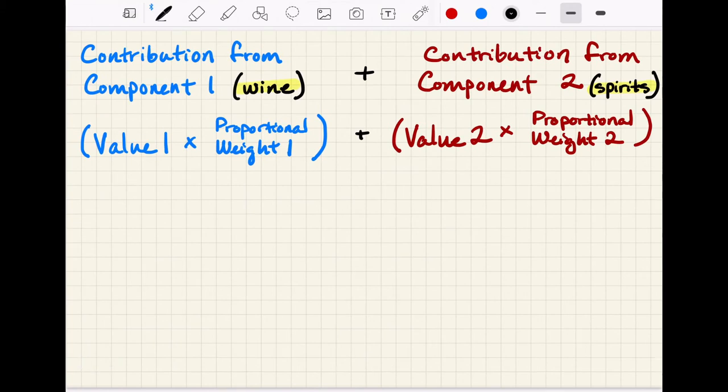Now when we talk about wine and fortifying wine, it works very much the same way. So we have a contribution from component number one, which is our wine, and we have a contribution from component number two, which is our spirits. And we have a value with a proportional weight for each component.